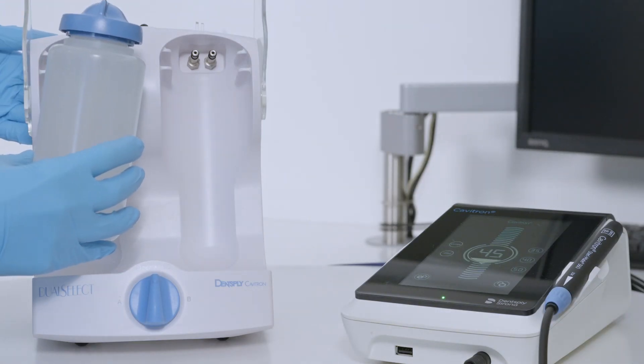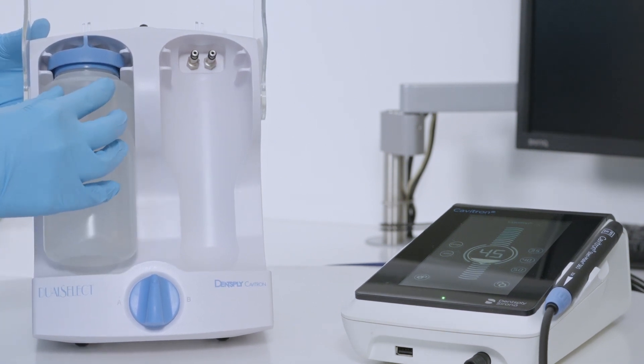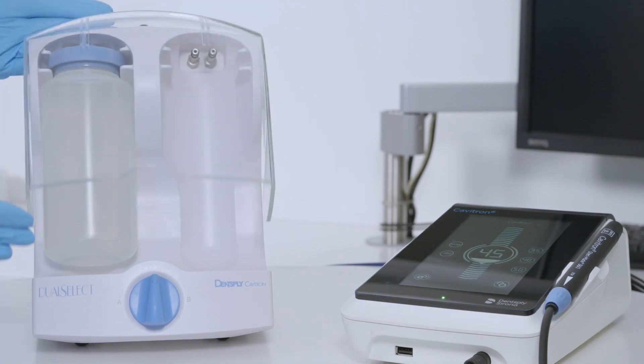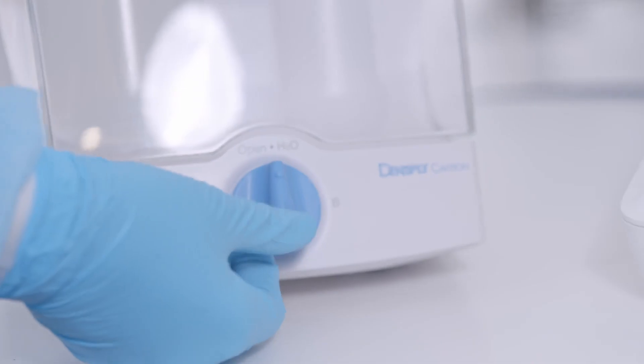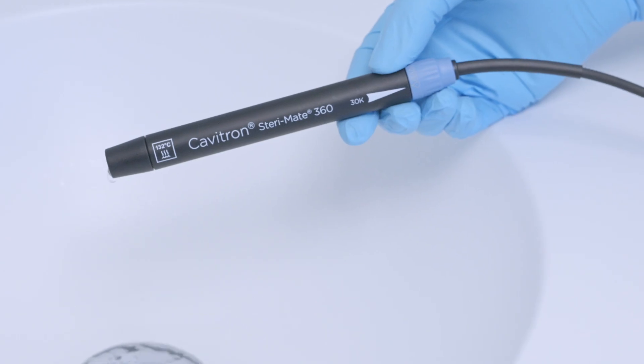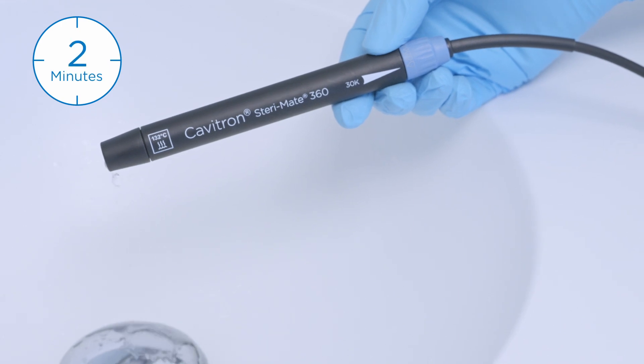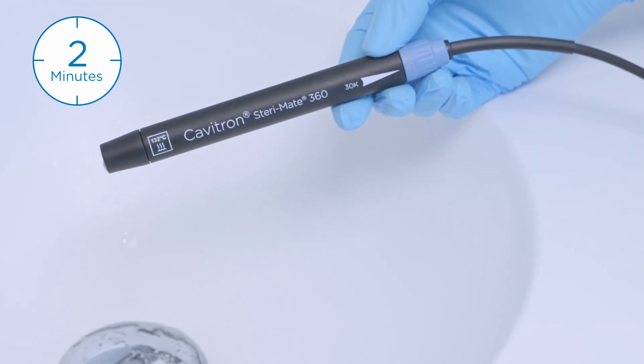After the minimum 10 minute wait time has passed, fill another bottle with clean water and place it in position A and close the shield. Set the selector knob to position A and operate the Cavitron system at maximum water flow for at least two minutes or until all the sodium hypochlorite odor disappears.